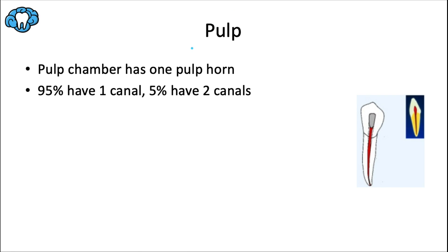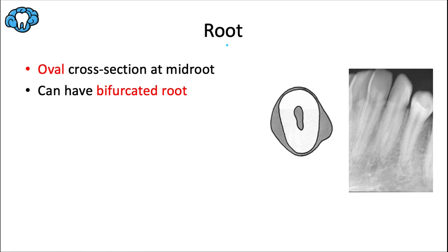Since we have one cusp, we have one pulp horn, just like the maxillary canine. The deep root flutes on both sides, combined with the already thin and narrow root, can essentially split the pulp canal into a facial and lingual canal — this happens about 5% of the time. Just like the maxillary canine, although the crown has an asymmetric diamond shape from the incisal view, if we cut the tooth in cross-section at the middle of the root we would see an oval shape. Both canines have oval cross-sections.